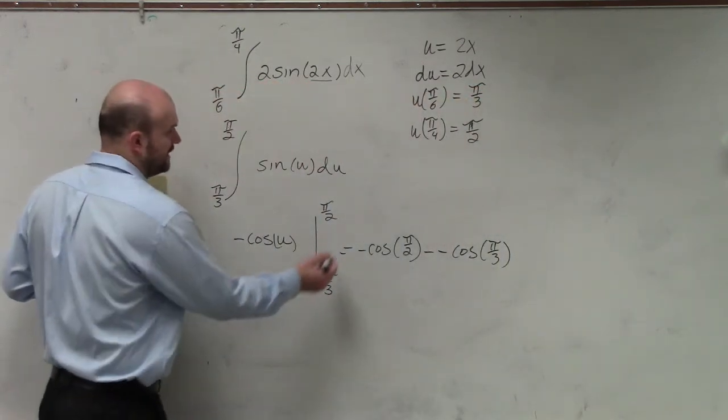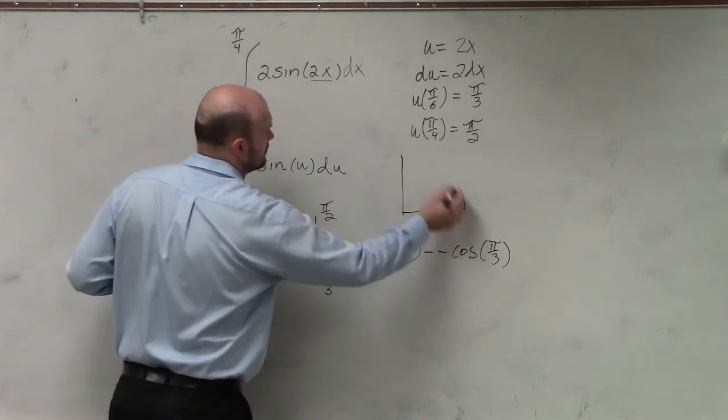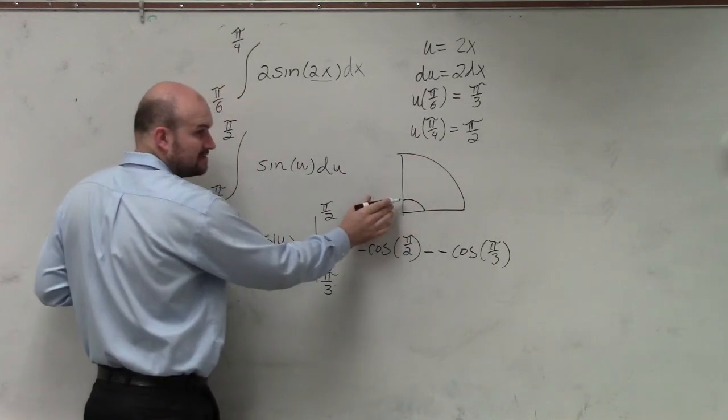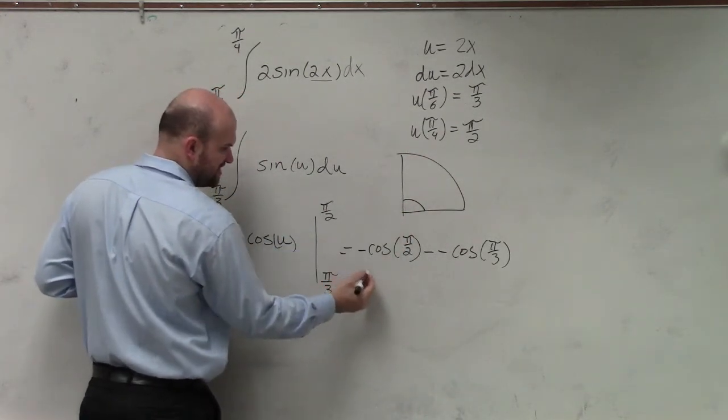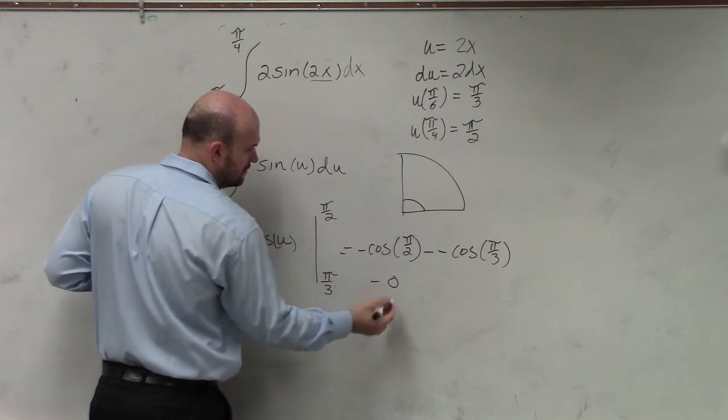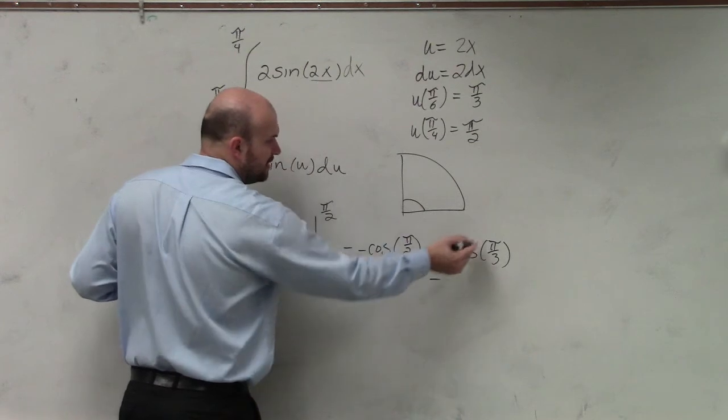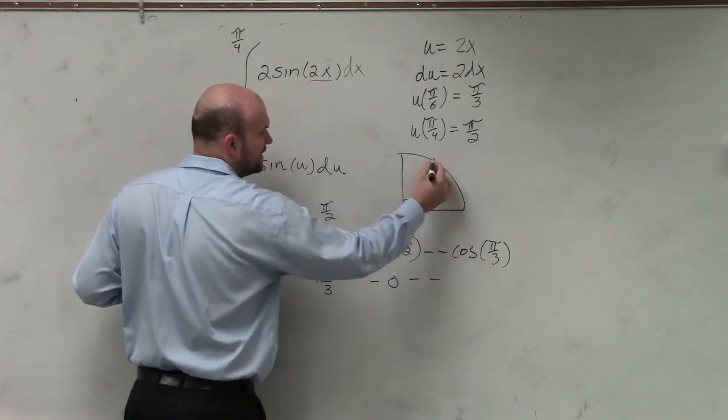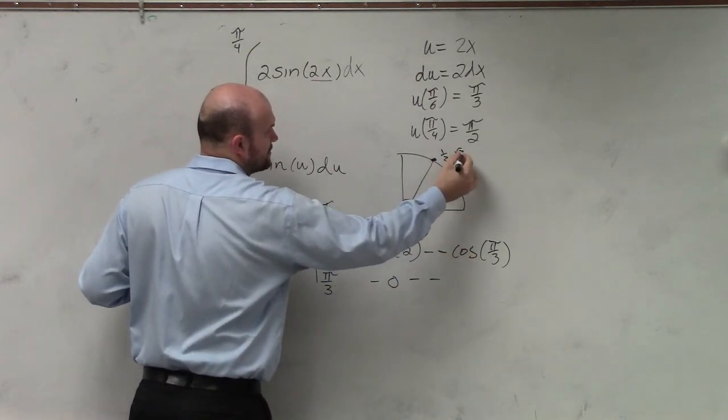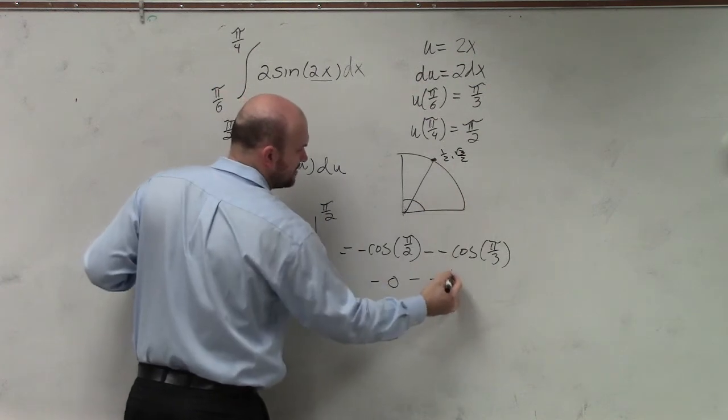So looking at your unit circle, π halves is there, which is 0. I'll just write minus 0, but it doesn't matter. Minus a negative cosine of π over 3 is right here, which is 1 half comma square root of 3 over 2. So that's going to be 1 half.